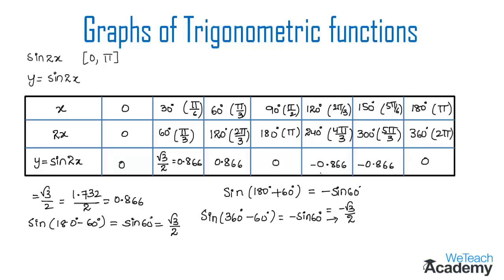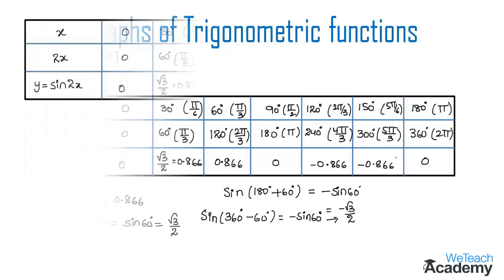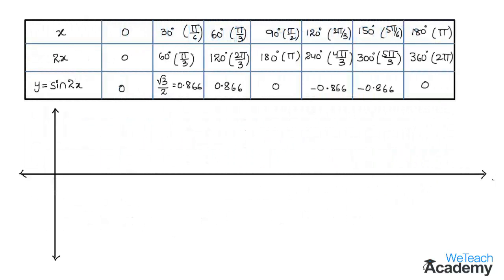Now let us plot the different values of y corresponding to the values of x on a graph sheet. We have a coordinate plane where the horizontal line is the x-axis and the vertical line is the y-axis. The point of intersection of both axes is the origin. The ordered pair (0, 0) is plotted at the origin.